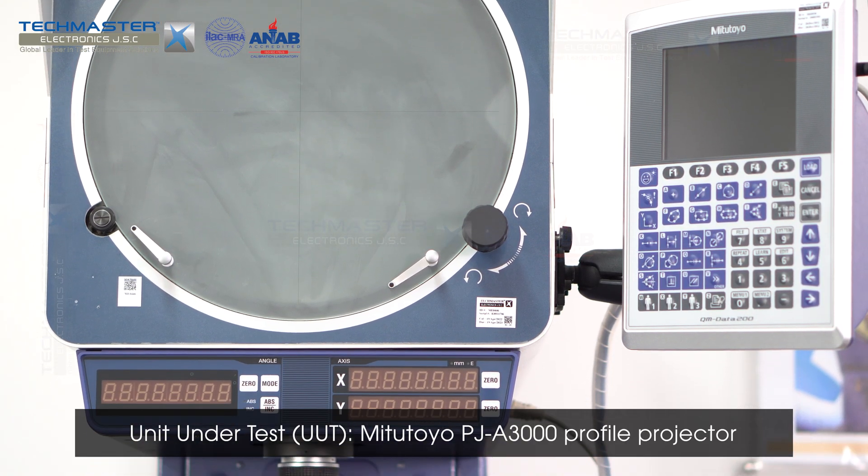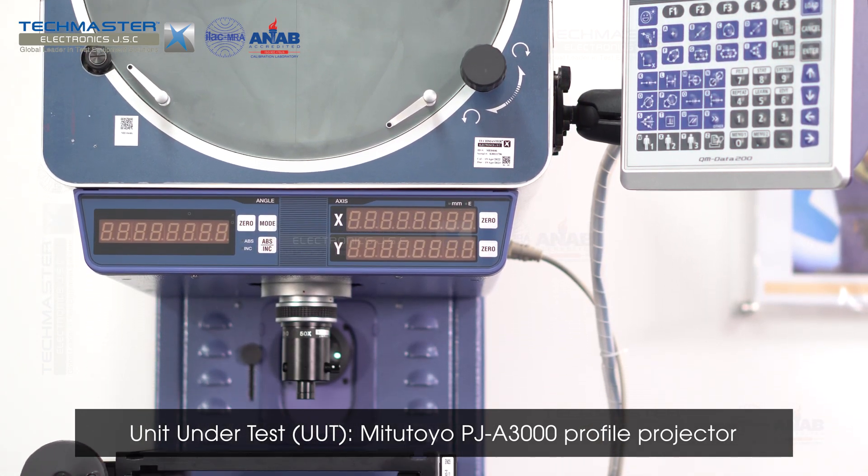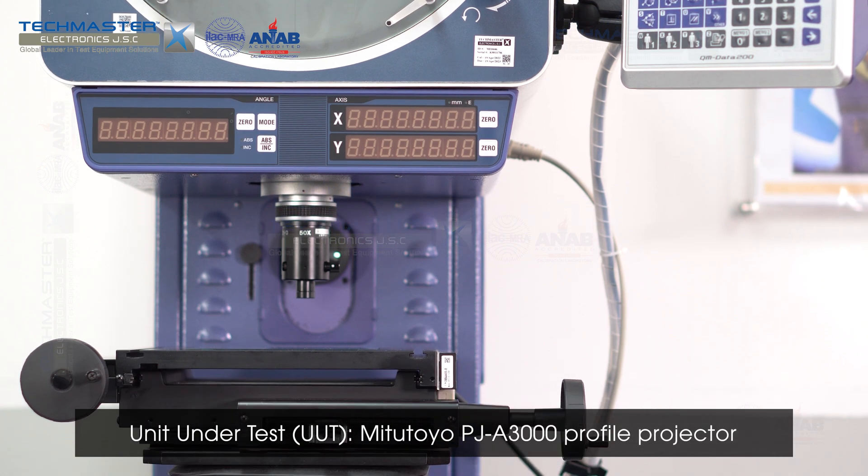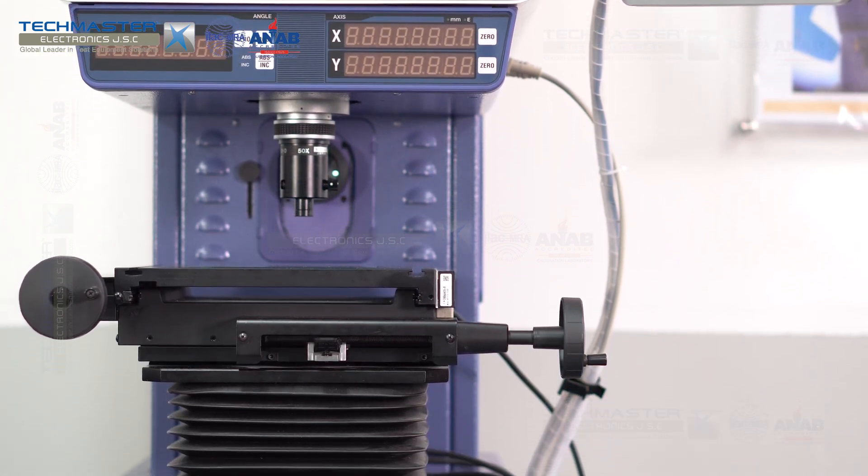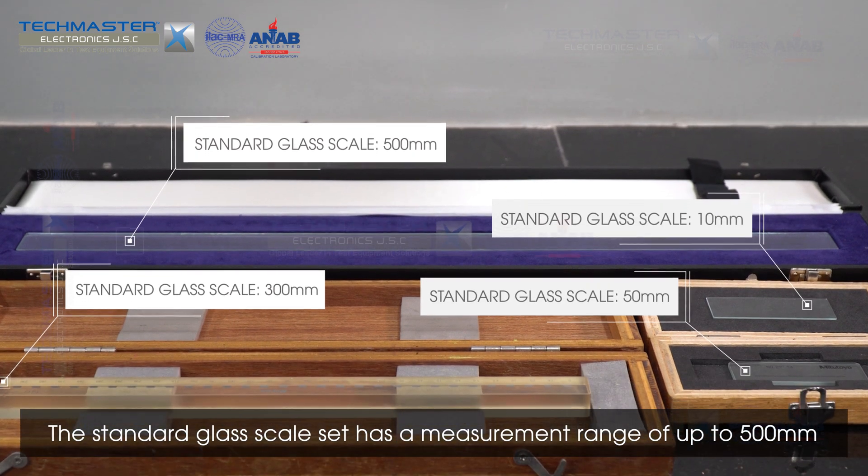Unit under test: Mitutoyo PJA 3000 Profile Projector. The standard glass scale set has a measurement range of up to 500 mm.